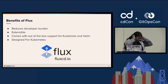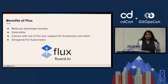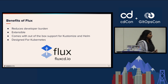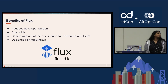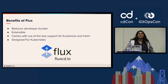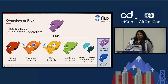The benefits of Flux are that it reduces developer burden. It's extensible, so you can just change it to however you want. It has out-of-the-box support for customizing Helm. It's designed for Kubernetes — the idea is that you don't have to do any more manual steps. You get away from the kubectl problem of having to make sure your versions are up to date and in sync. And you're not as likely to be fixing a deployment on a weekend that you manually did on Friday — I've definitely had that situation.